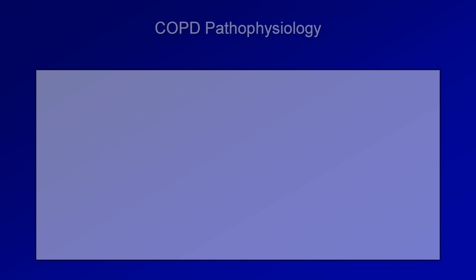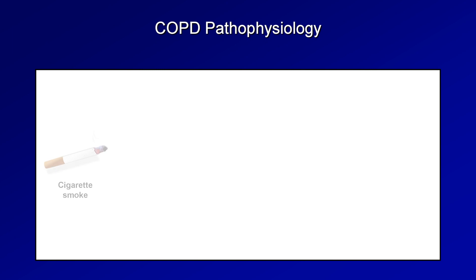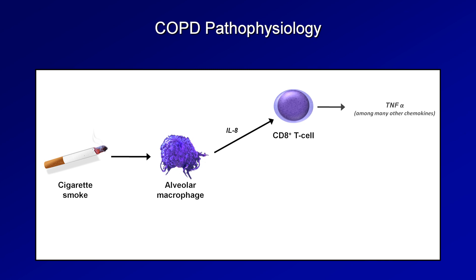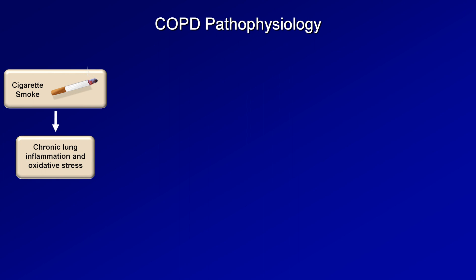Moving on to COPD, the immunological pathogenesis appears to not be as complex as asthma, but the pathophysiology is quite involved. The overwhelming majority of COPD is caused by cigarette smoke. Inhaled smoke activates alveolar macrophages with release of IL-8. IL-8 can stimulate CD8 T cells to release TNF-alpha, among many other chemokines, and can also locally attract neutrophils, which release proteases — enzymes that digest other proteins. Let me show you the numerous downstream effects that smoking-induced chronic inflammation has in the lungs.